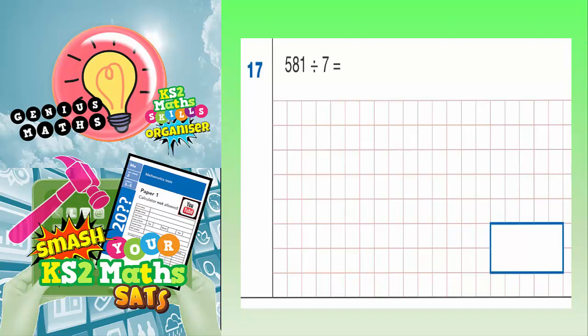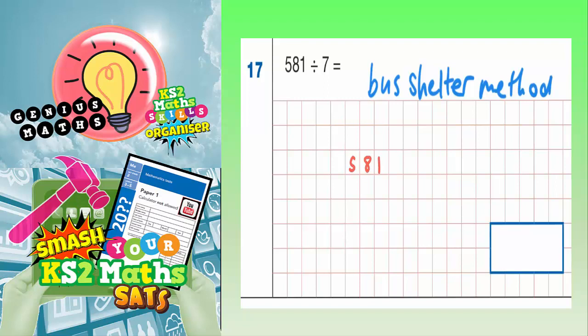Question 17: 581 divided by 7. Most of you probably won't know your 7 times table up to 581, so this is going to be the bus shelter method for short division. We want 581 and we are dividing that by 7.